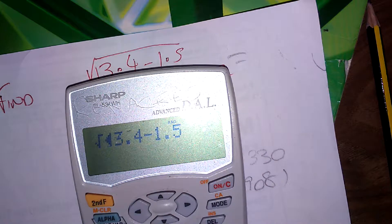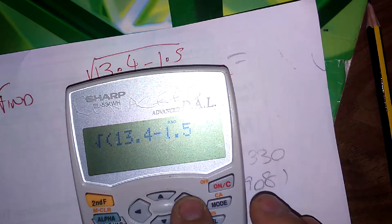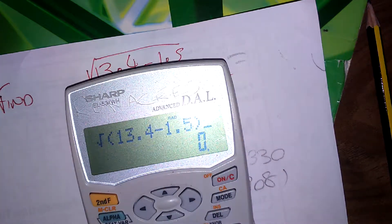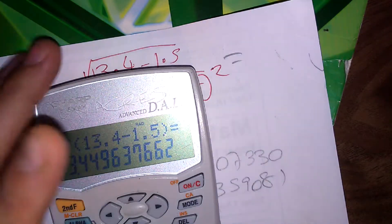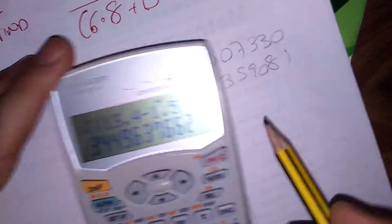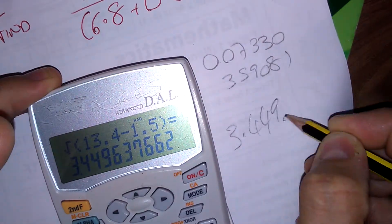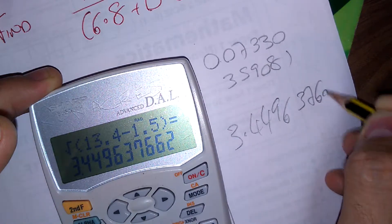To change it, you have to put everything in brackets at the top. Now this will square root all of it. Now I'm going to write this down, most of the numbers: 3.449637662.